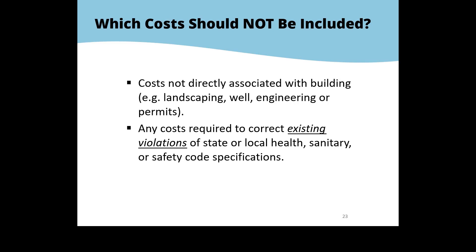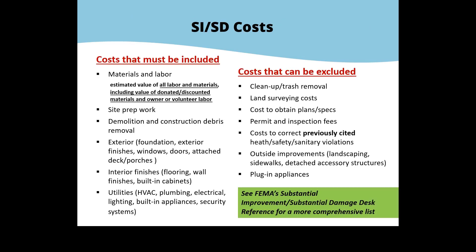What costs should not be included? Costs not directly associated with the building, such as landscaping and permit fees, are generally not included. Any costs required to correct a documented existing violation are also excluded. The desk reference has a very detailed list of what needs to be included and what can be excluded. For example, plug-in appliances are not included. Just be aware of those items.